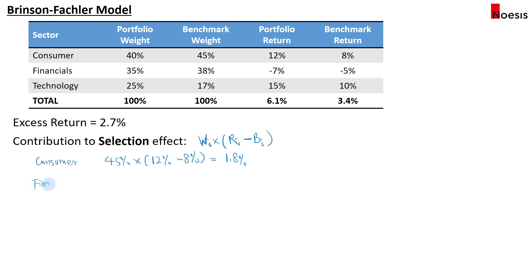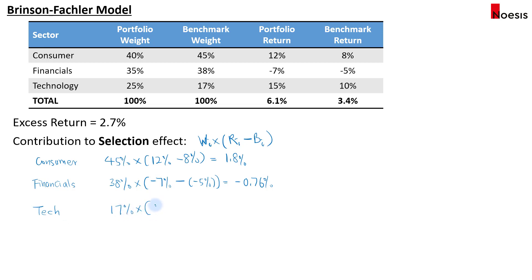For financials, that is 38% times (negative 7% portfolio return minus negative 5% benchmark return), equaling negative 0.76% — the manager's selection in financials is worse than the benchmark. For technology, that is 17% times (15% minus 10%), giving positive 0.85%. The total selection effect is 1.89%, which contributes back to the excess return.